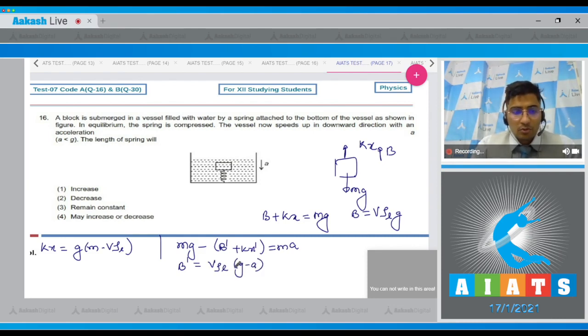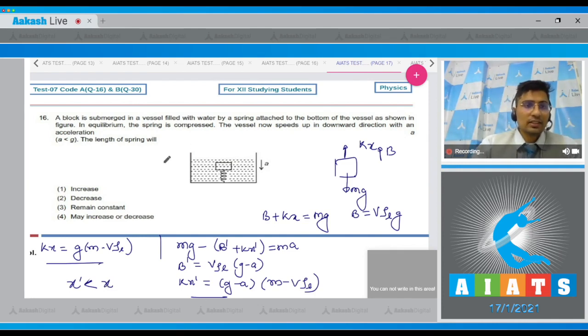On substituting this we get a value of kx dash to be equal to g minus a times m minus v rho_l. Let us compare this equation and this equation. We can clearly see that x dash is coming out to be less than x so compression will be less and because the compression is less the length of the spring will increase.